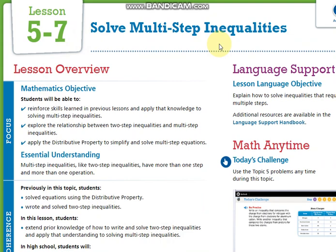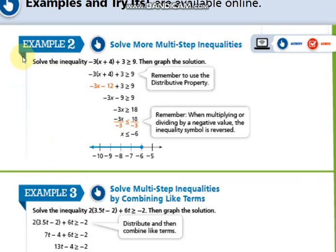The last lesson for us in this unit and in this week is going to be solve multi-step inequality. Same as multi-step equations. Sometimes we need to use the distributive property first. Sometimes we need to add like terms first. As you can see here in this example, I need to distribute first and I need to add like terms.